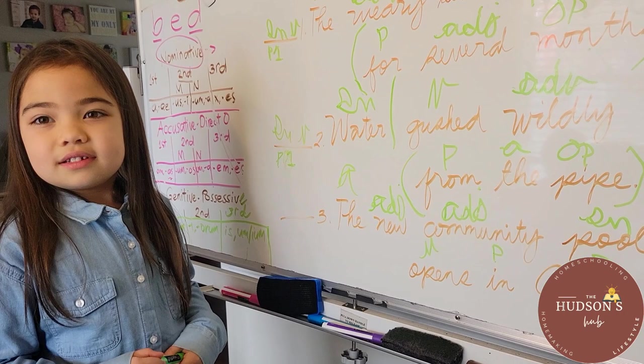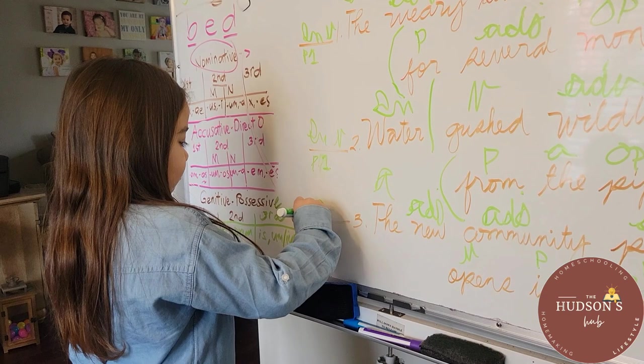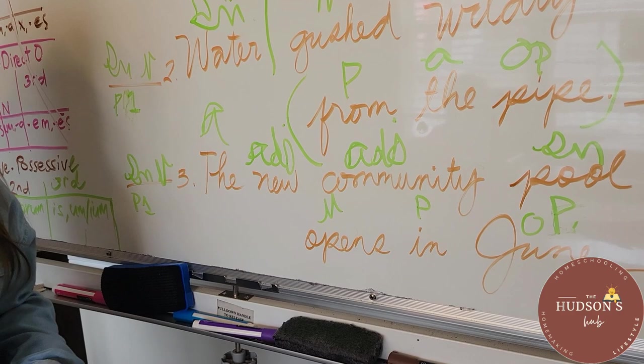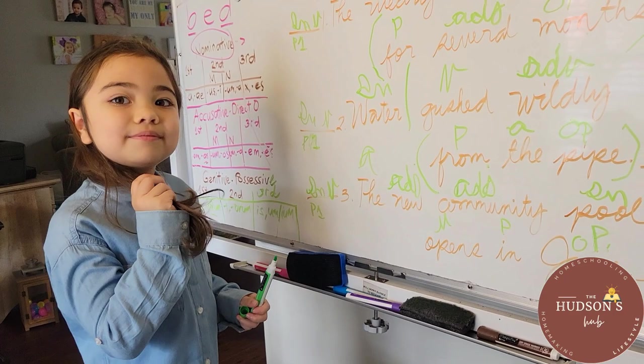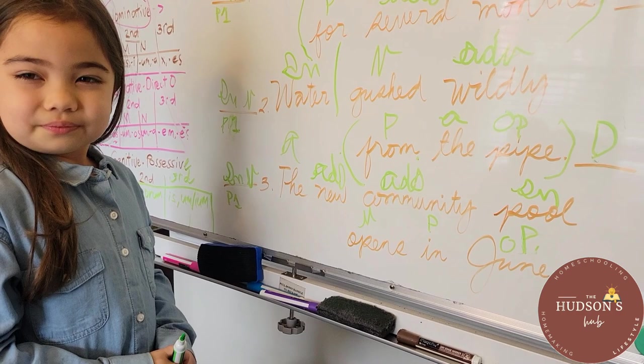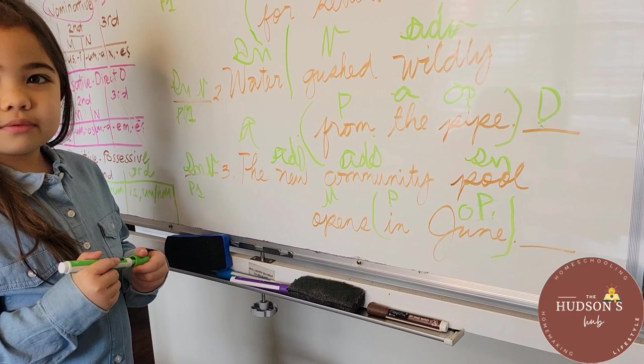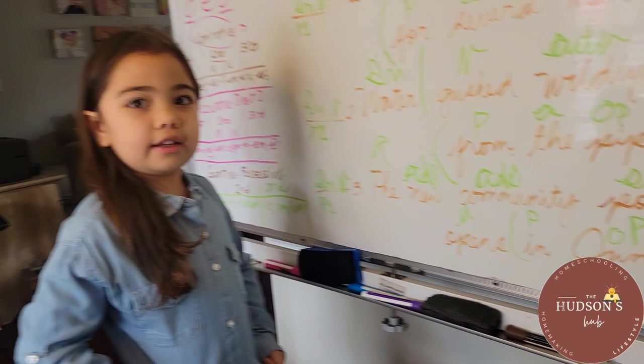Now we do the subject noun verb — Pattern 1. We put SN for subject noun, V for verb, and P1 for pattern 1. Perfection. Now we have to find our prepositional phrase and put it in parentheses. In June. The prepositional phrase will start at the preposition all the way to the object of the preposition.